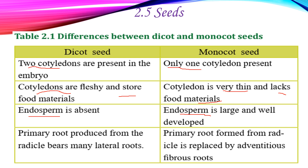In dicots, the primary root is produced from the radicle and bears many lateral roots. In monocots, the primary root is replaced by adventitious and fibrous roots.